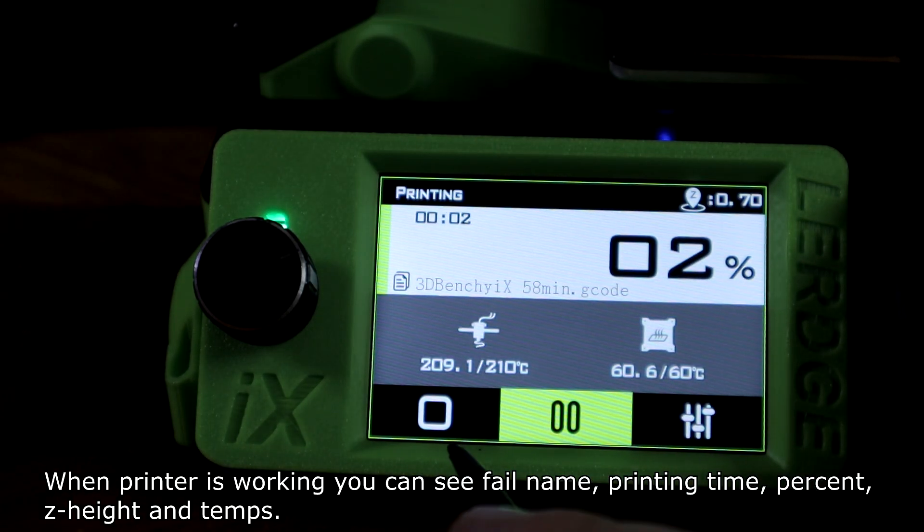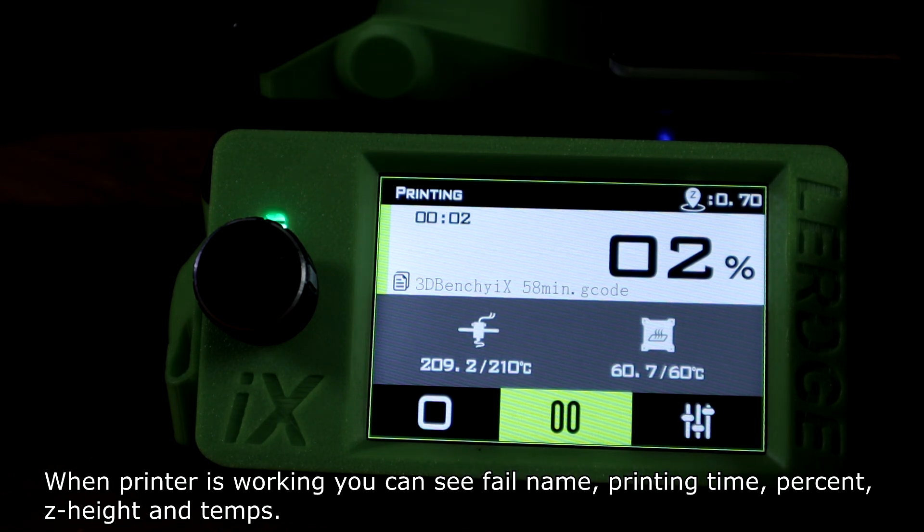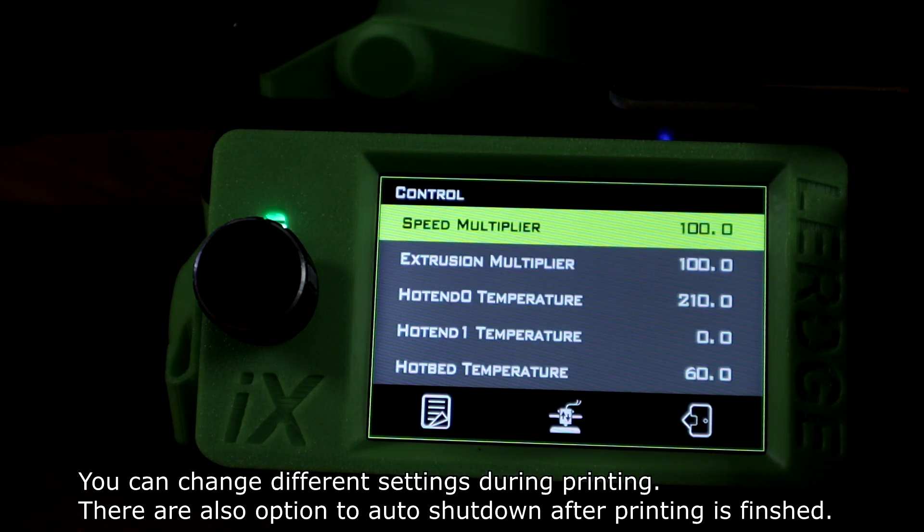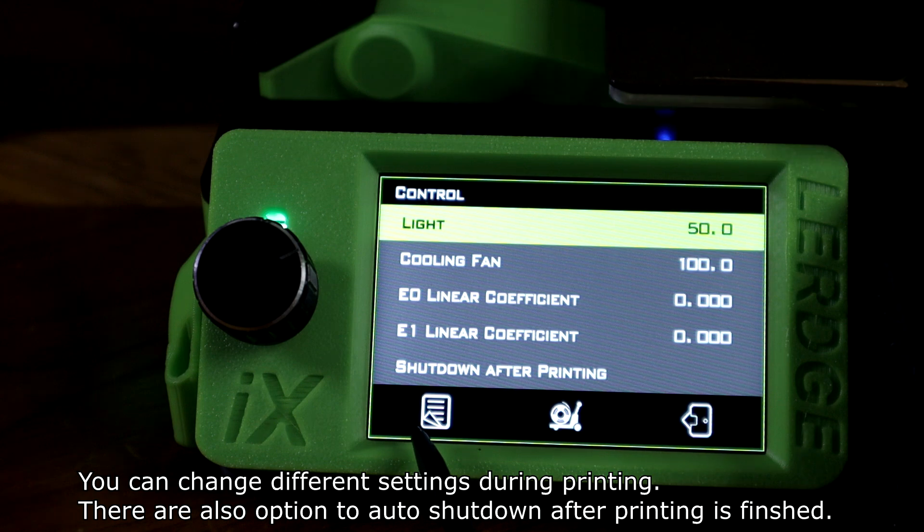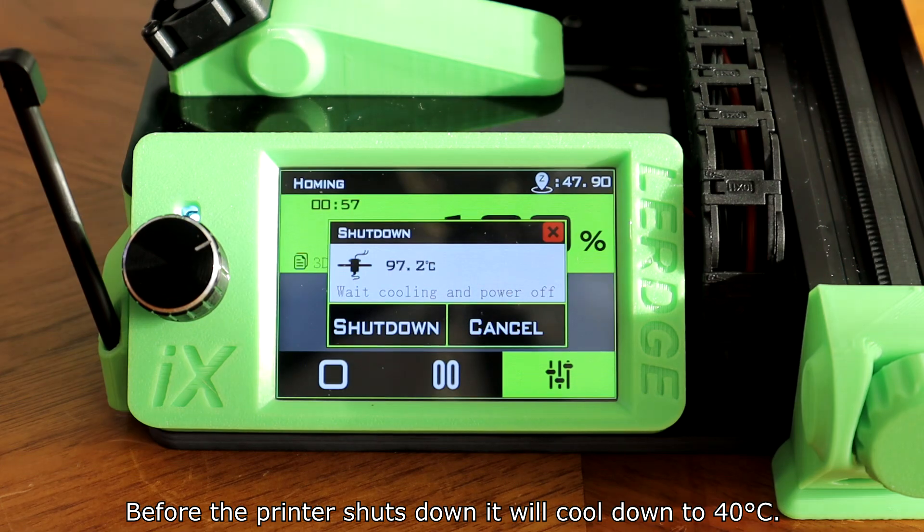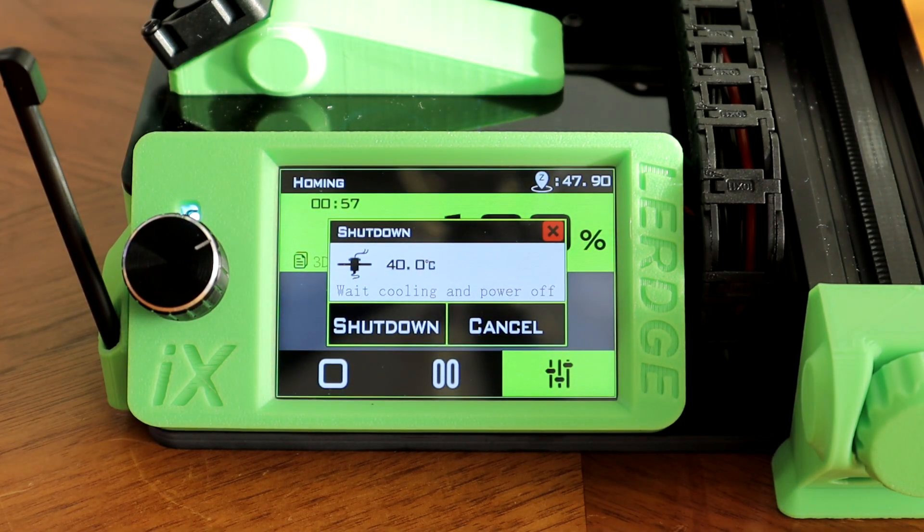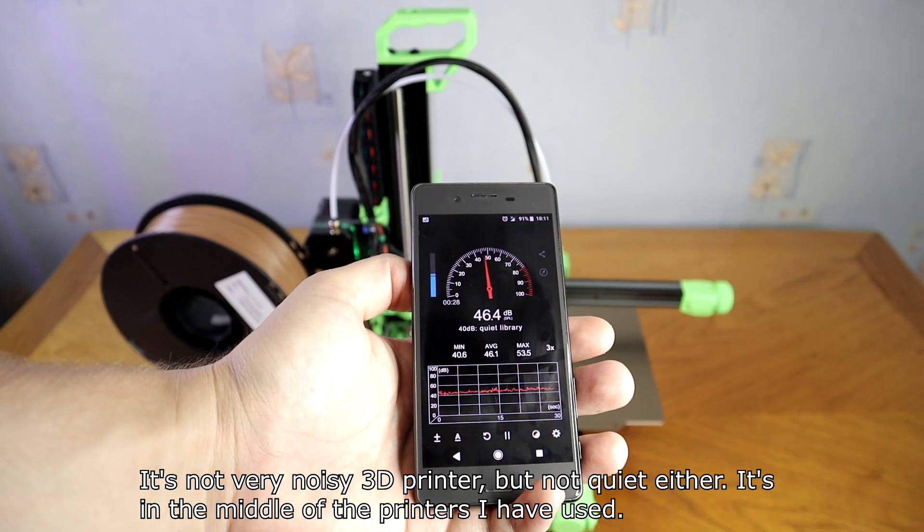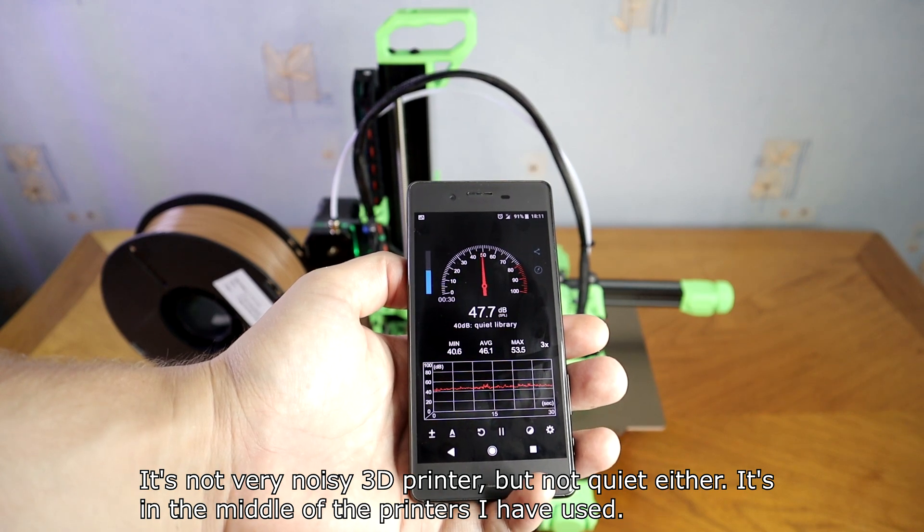When printer is working, you can see file name, printing time, percent, Z height and temps. You can change different settings during printing. There are also options to auto shut down after printing is finished. Before the printer shuts down, it will cool down to 40 degrees. It's not a very noisy 3D printer, but not quiet either. It's in the middle of the printers I have used.